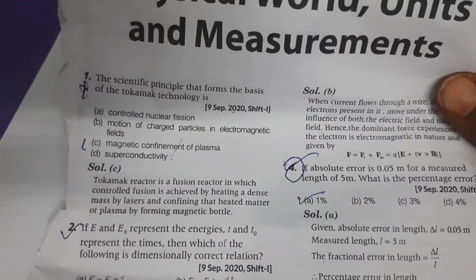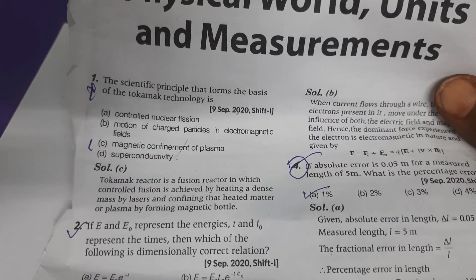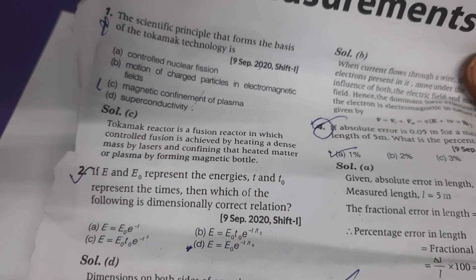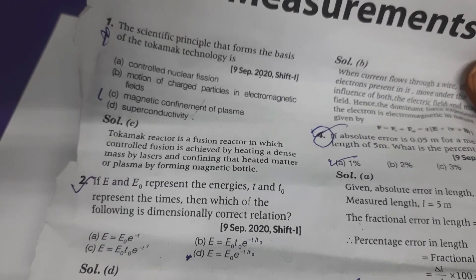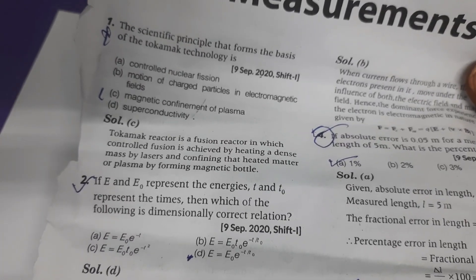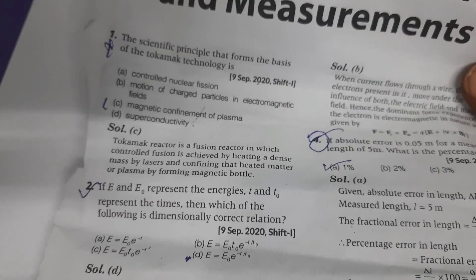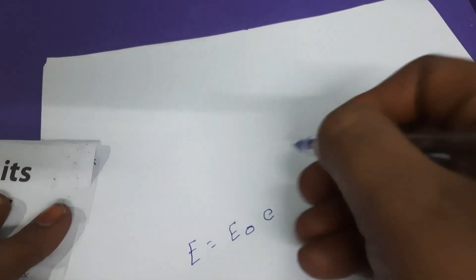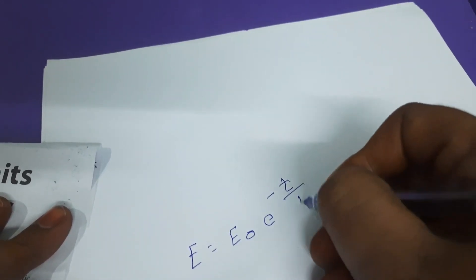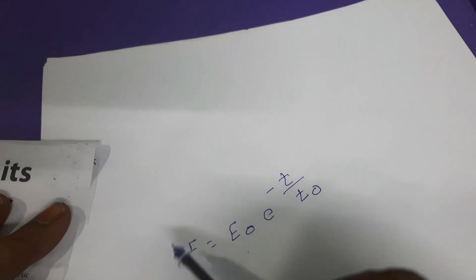The second question: E and E₀ represent energies, T and T₀ represent timings. Which of the following is dimensionally correct? Option A — E = E₀ · T^(−T) — is not correct because LHS has only energy while RHS has energy times time. Option B is also not dimensionally correct. Option C has LHS as energy but RHS as energy × time × T^(−2), so also incorrect. Option D gives E = E₀ · e^(−T/T₀). Here T/T₀ is dimensionless, so LHS and RHS both have dimensions of energy. This is dimensionally correct.